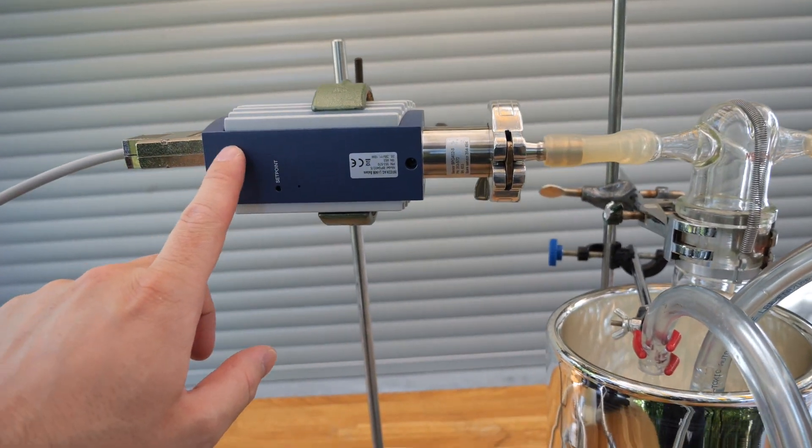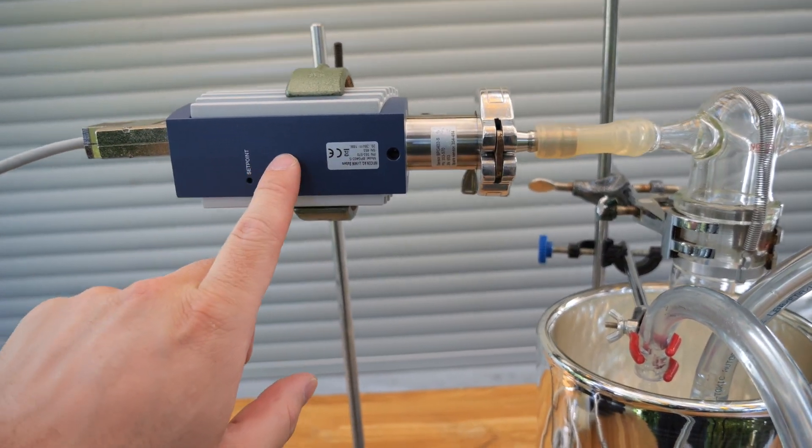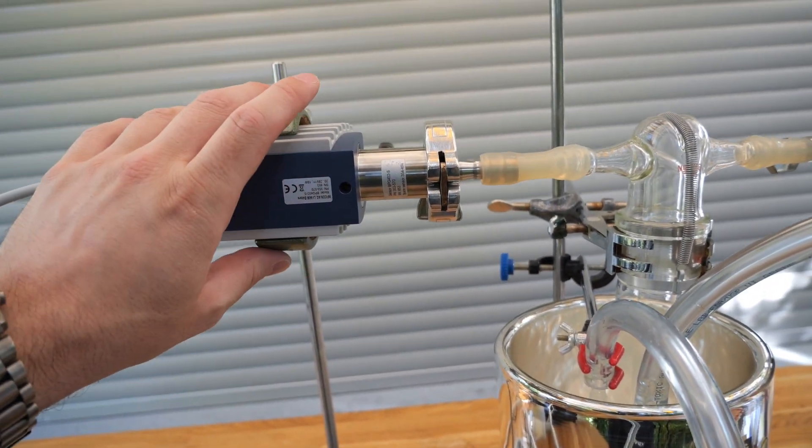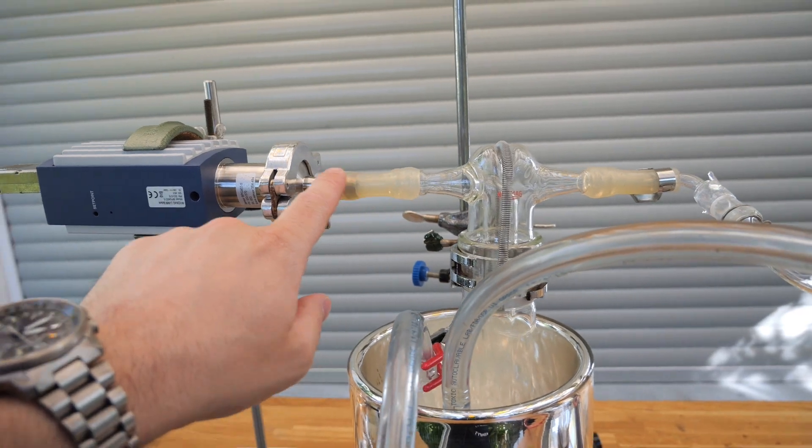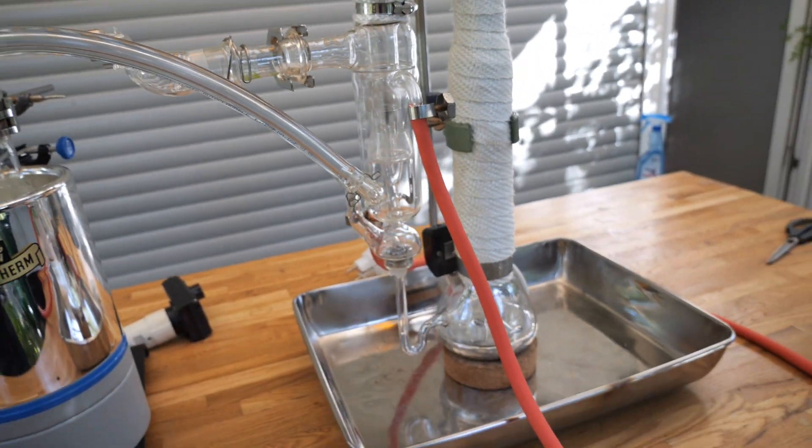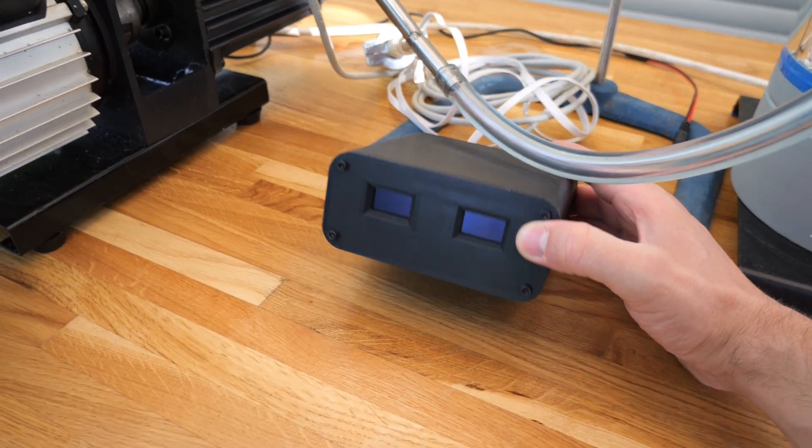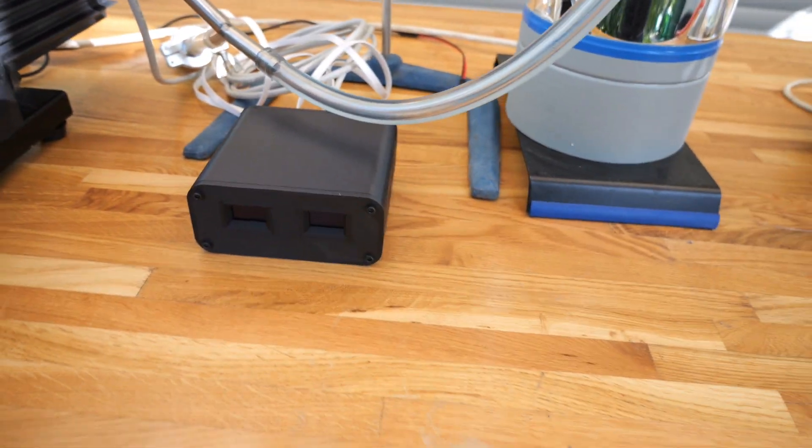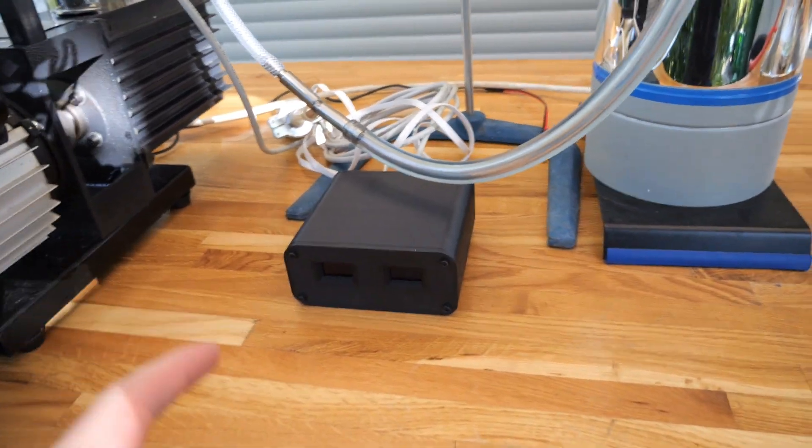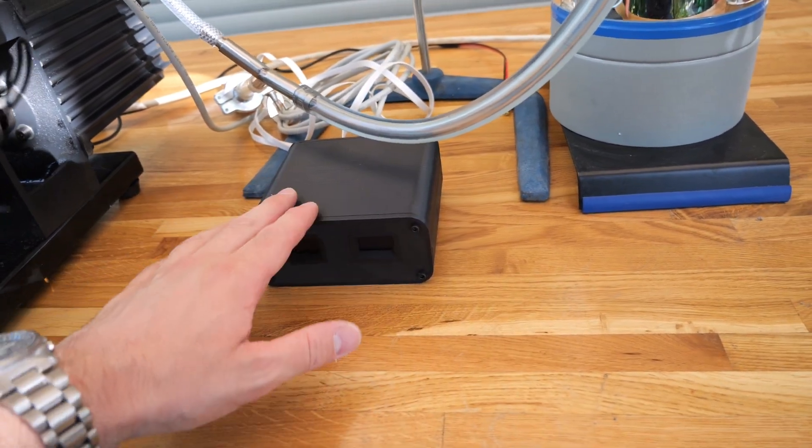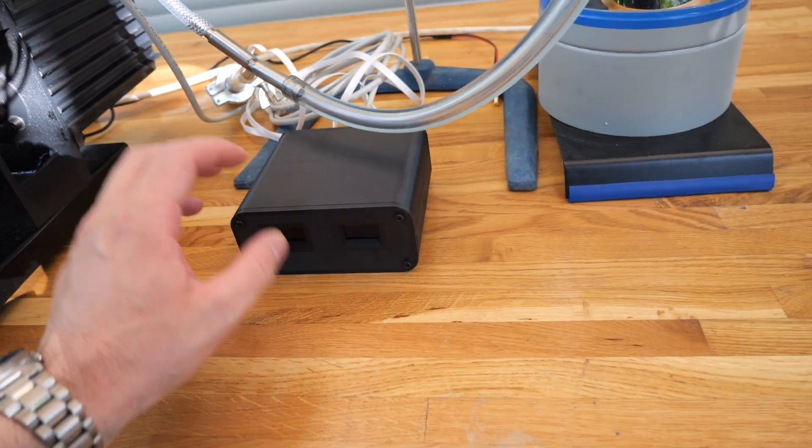In my case I have my Inficon BPG402 connected which is a high vacuum gauge and it will measure the pressure at this point here when we run the pump. Both vacuum gauges are connected to this guy right here. It is my new project, it is a vacuum gauge controller and this is just a small teaser. There will be a separate video about it.